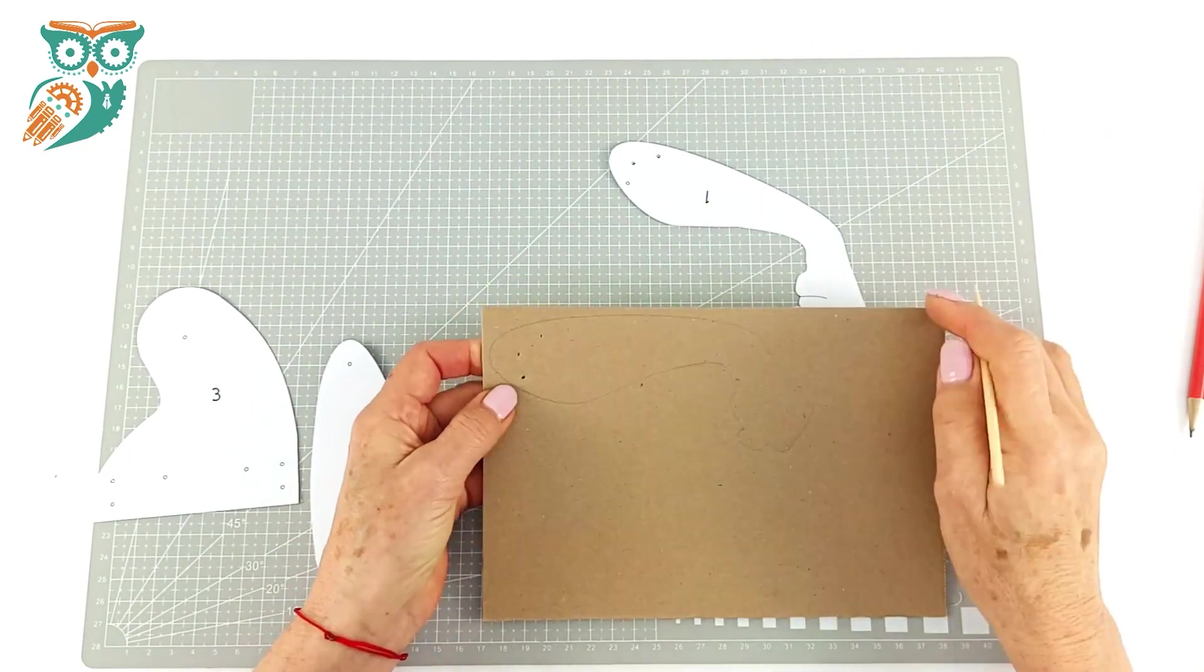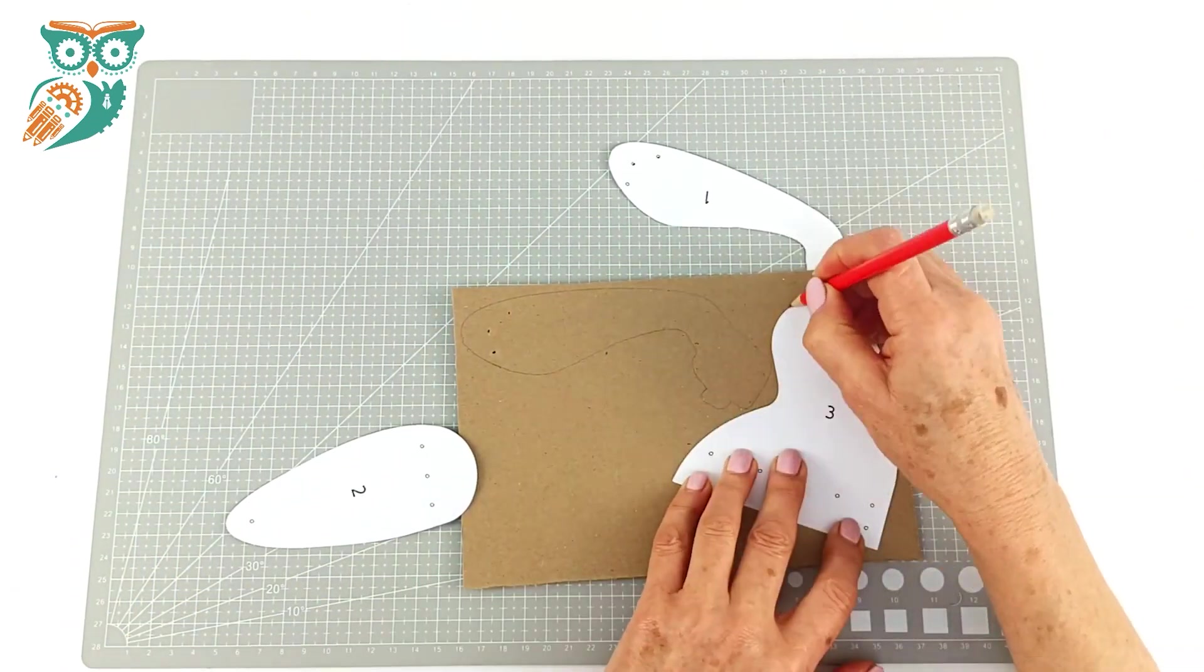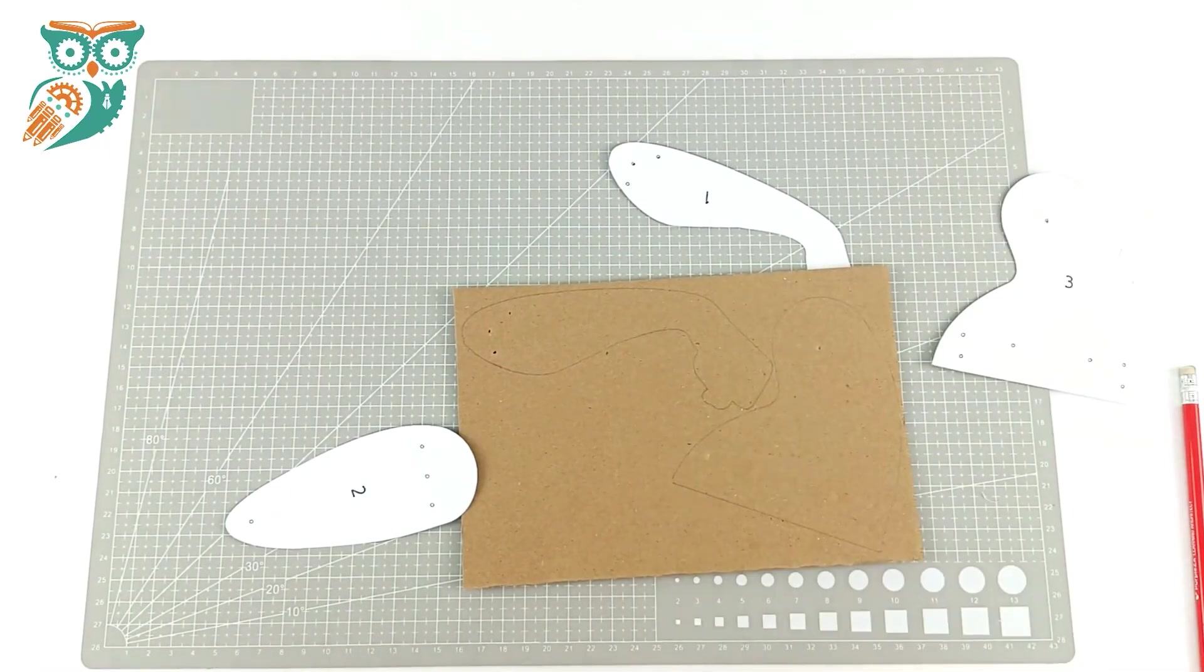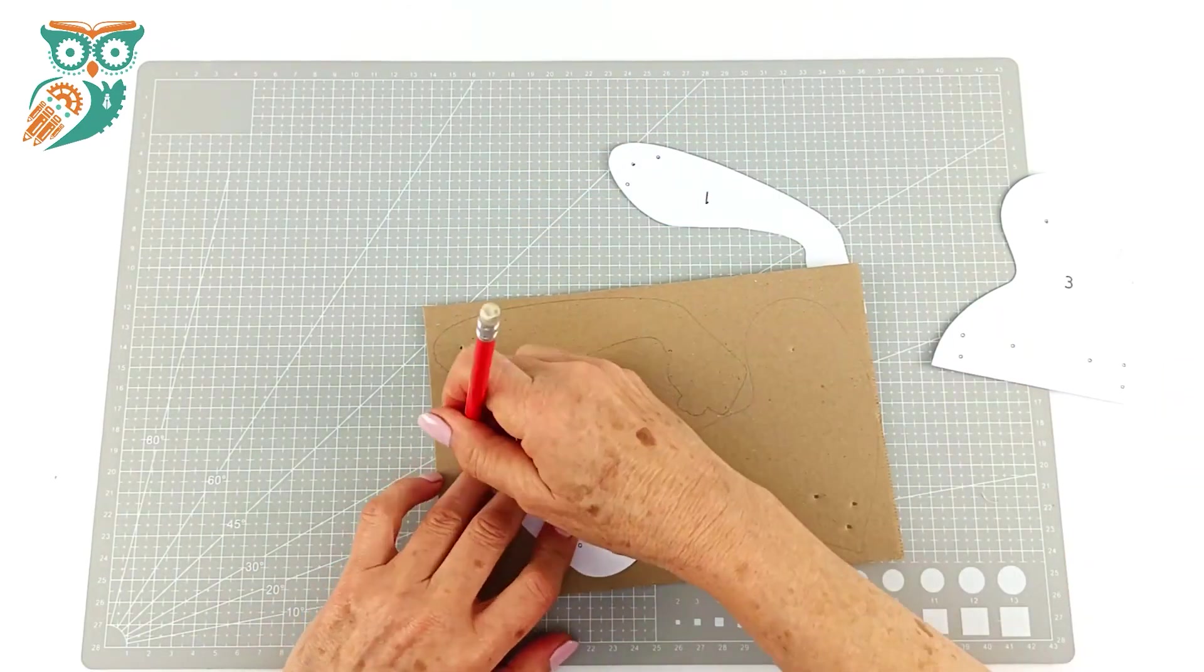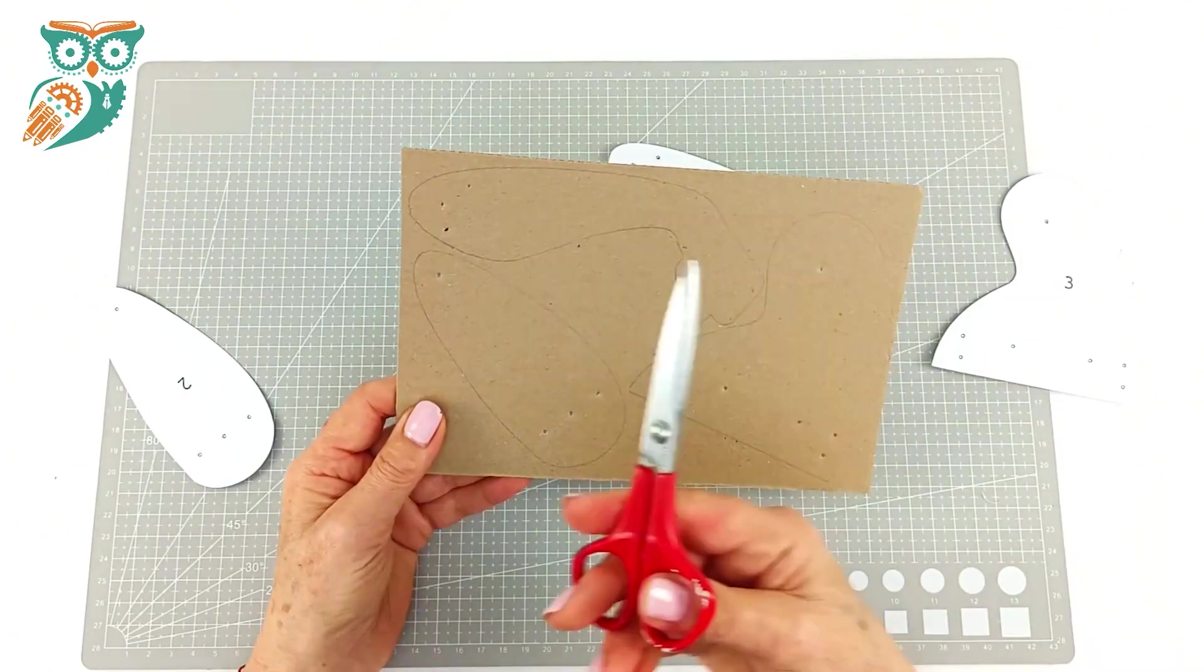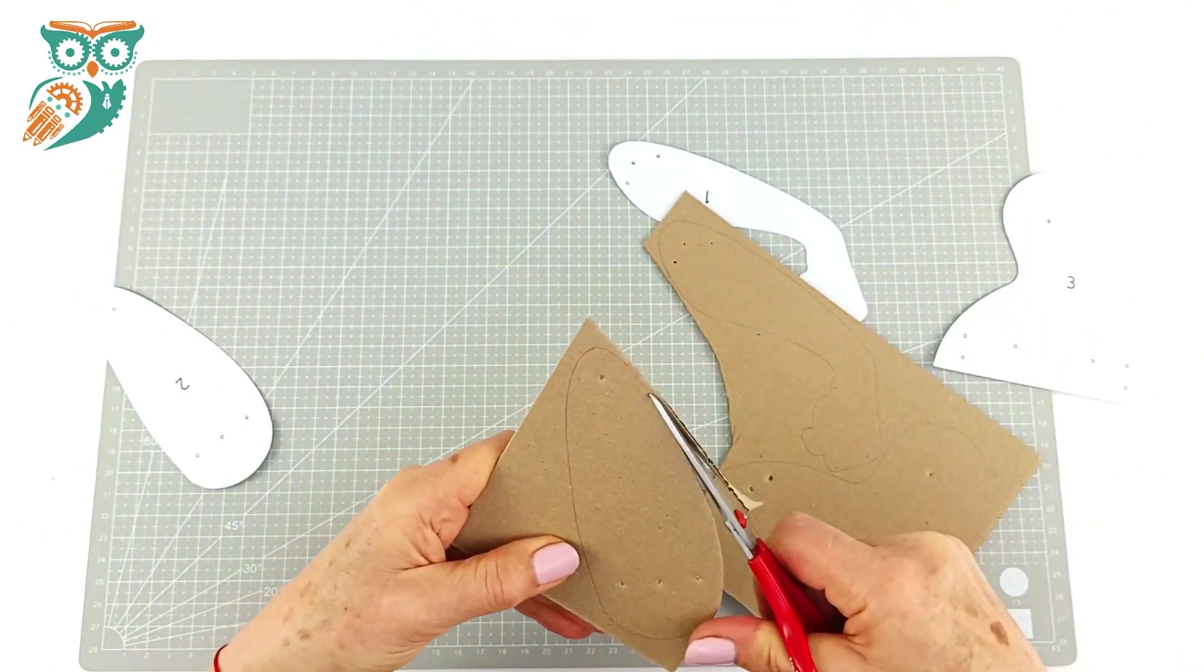You don't need anything fancy and then we're using a skewer just to help make those holes again following our template. We're just going to make those holes a little bit larger and we're going to trace the last piece here and do the same thing and then we're going to cut out each of those pieces.